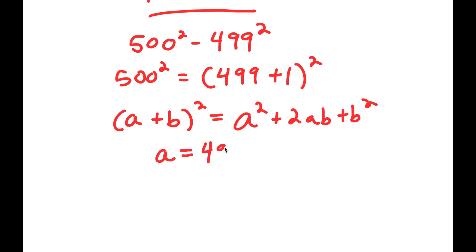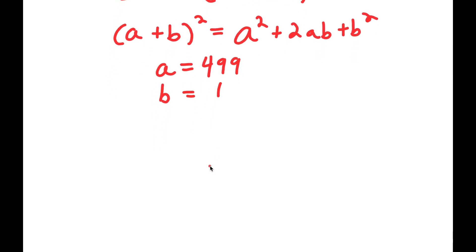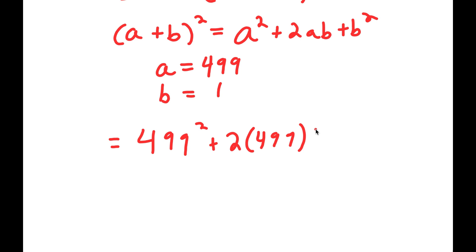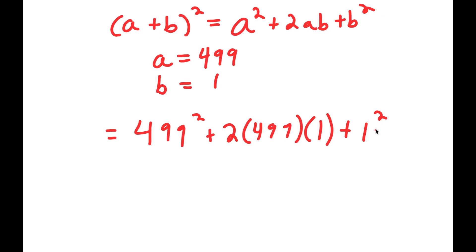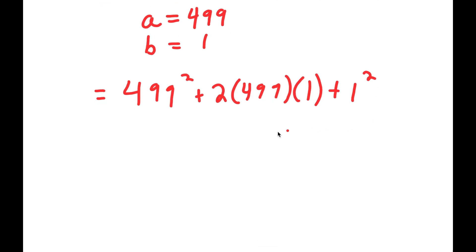In this case, a is 499 and b equals 1. So this turns into 499 squared plus 2 times 499 times 1 plus 1 squared, which simplifies to 499 squared plus 998 plus 1.